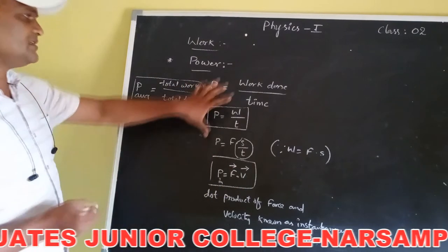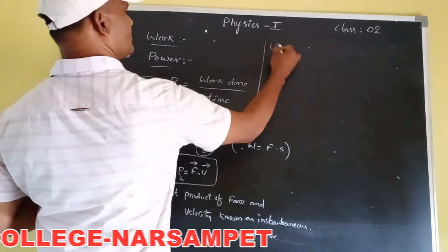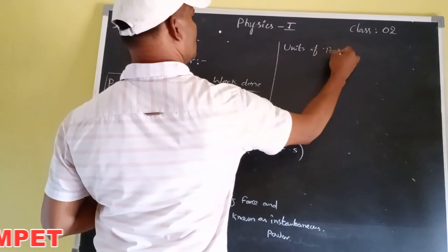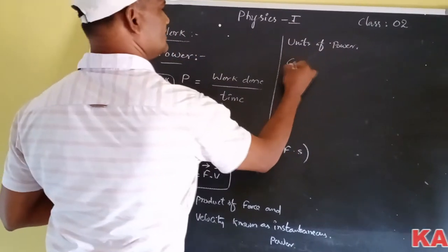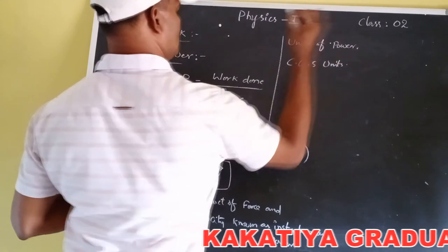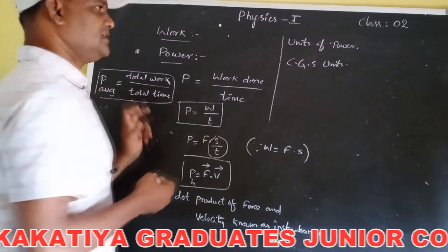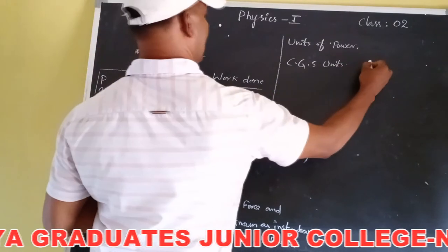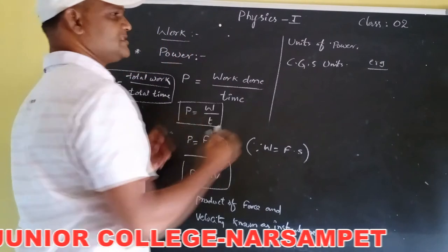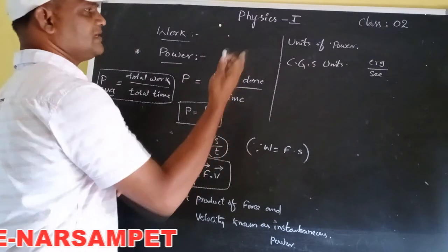Now let us look at the units of power. First, the CGS unit: the CGS unit of work is erg, and the unit of time is second, so the CGS unit of power is erg per second.